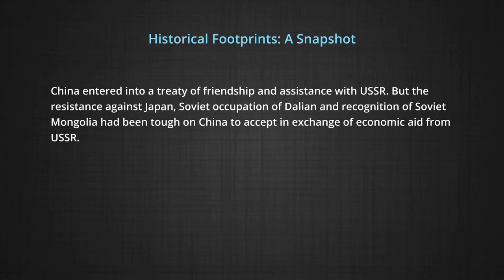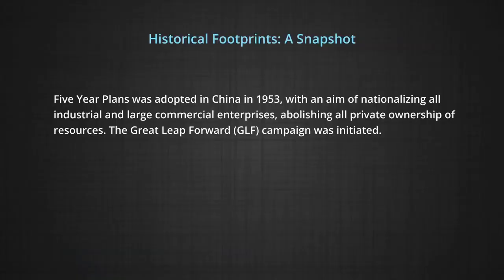In exchange for economic aid from the USSR, the Korean War resulted in intensifying radical reforms in China. Five year plans were adopted in China in 1953, with an aim of nationalizing all industrial and large commercial enterprises and abolishing all private ownership of resources. The Great Leap Forward campaign was initiated, with collectivization of lands under the commune system where people collectively cultivated lands, and people were encouraged to set up industries in their backyards to industrialize the country on a massive scale.